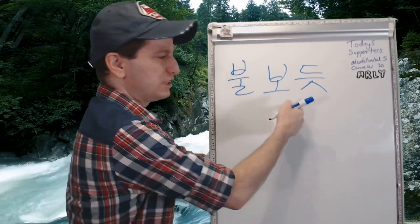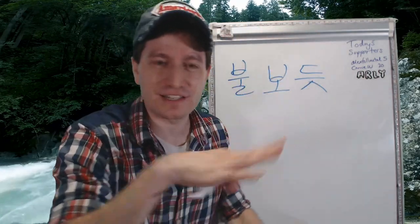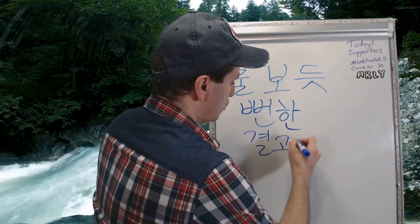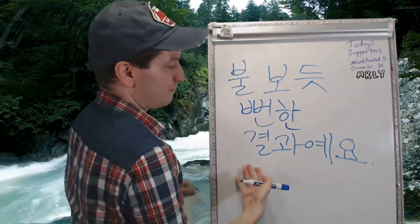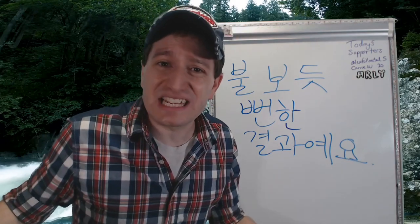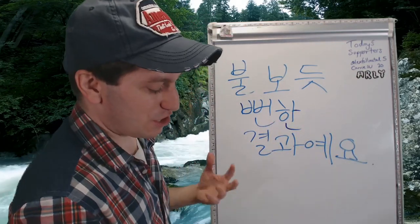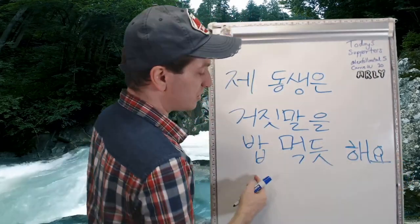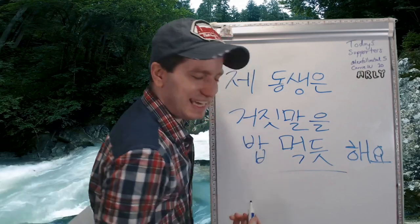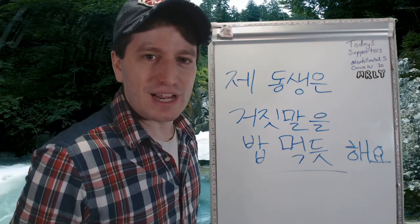Let's do a sentence. 불 보듯 뻔하다 — 불 means fire. As if you see fire, you can't miss it, right? If you see fire — it's a Korean idiom — oh, it's there, you see it. So clear as day. 결과 — it is a result or an outcome — as clear as day, clear as you see fire. It was so easy to see what the result was — obviously. It was a result that was as clear as day. Another example: 밥 먹듯이 거짓말을 한다 — as you eat a meal. He lies like he eats a meal — often, all the time. He lies like he eats a meal, three times a day, a lot.